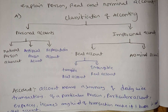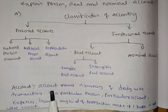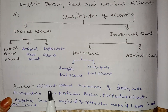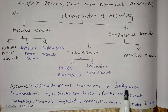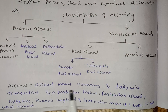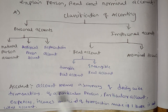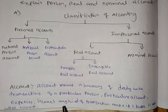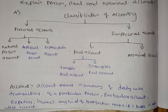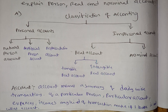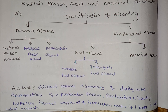Account means a summary of day-wise transactions of a particular person or particular account. Expenses, income, any kind of transactions — we record them in one book called an account. For example, a person's account maintains all transactions of income or expenses.